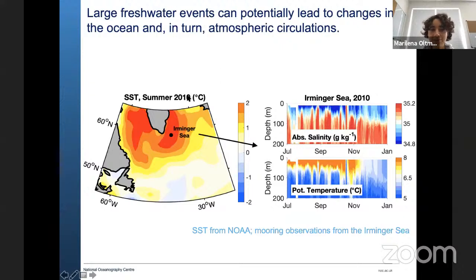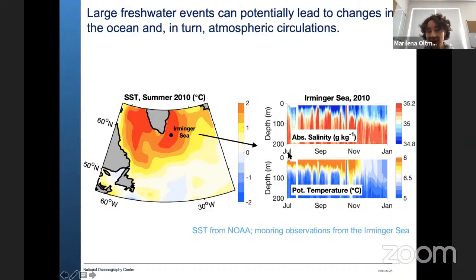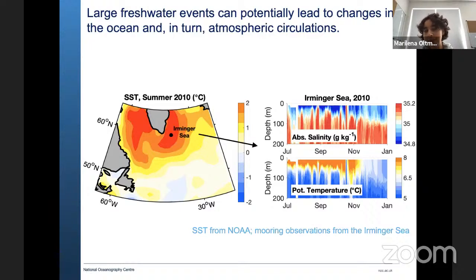However, some of the fresh water does reach the sub-polar region. This is shown from mooring observations in the Irminger Sea, just southeast of Greenland. This was a very warm summer in 2010. The observations from summer to winter show first a very fresh surface layer — salinity is in grams of salt per kilogram of water, so blue means less salt or more fresh water. In summer it was very warm, but then it cooled, and the fresh water didn't mix because stratification was very strong and prevented the water from mixing down.